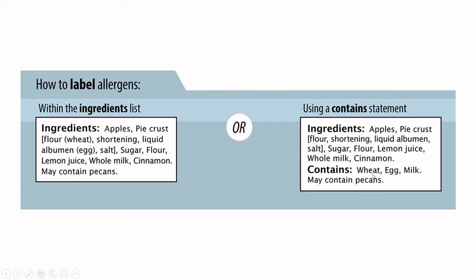We can embed allergens within the ingredients list, but what we're seeing more commonly is the 'contains' statement, because it isolates allergens into a very discrete, highlighted format. So the ingredient statement reads: apples, pie crust, flour, shortening, liquid albumin, salt, sugar, flour, lemon juice, whole milk, and cinnamon — followed by 'Contains: Wheat, Egg, and Milk' and a 'may contain' statement. This format is becoming more common because for complex products with dozens of ingredients, it allows someone requiring allergen scrutiny to quickly identify what allergens are present by scrolling to the end of the ingredient list.